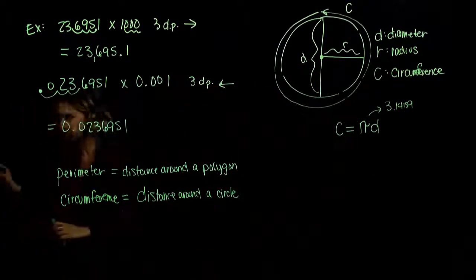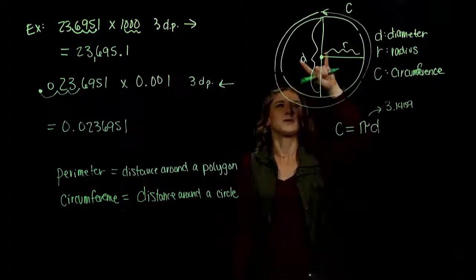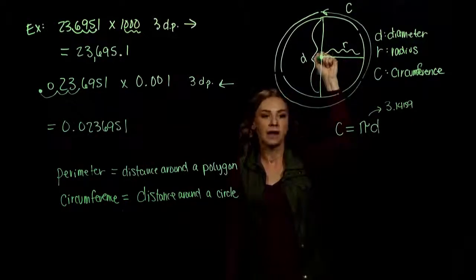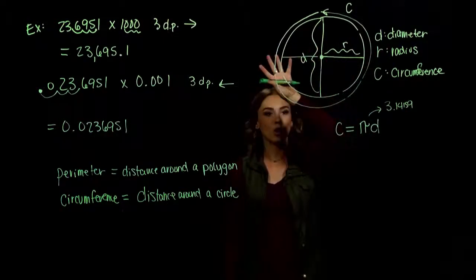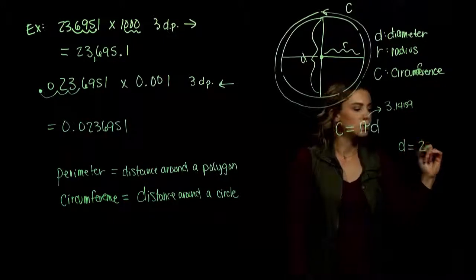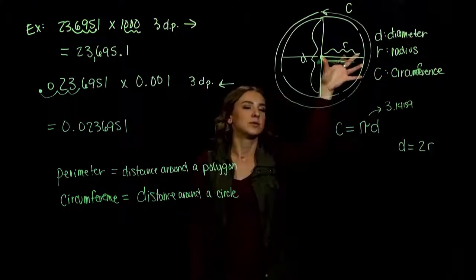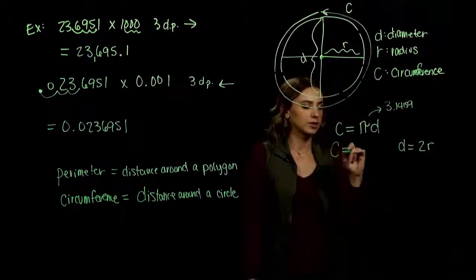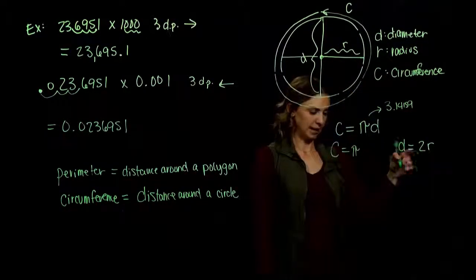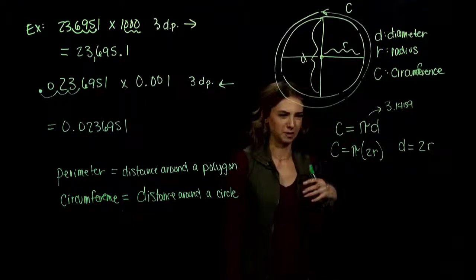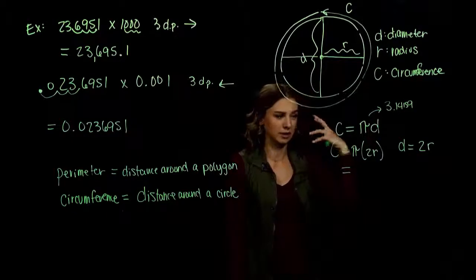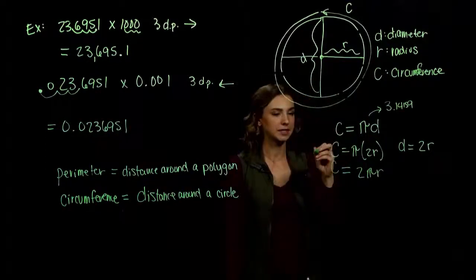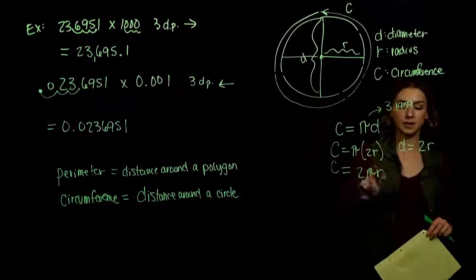Another way to look at it: the diameter and the radius are tied together. If the radius is only half the distance, putting two radii together — r and another r — gives us all the way across the circle. So the diameter is also 2 times the radius. Another way to write the circumference is pi times 2r, or 2πr. The order doesn't matter with multiplication. They all mean the same thing — they're just built off different pieces of the circle, the diameter or the radius.